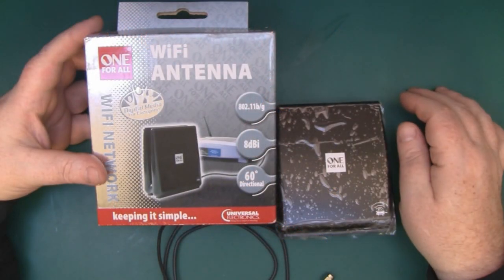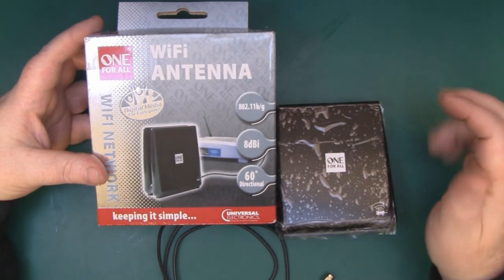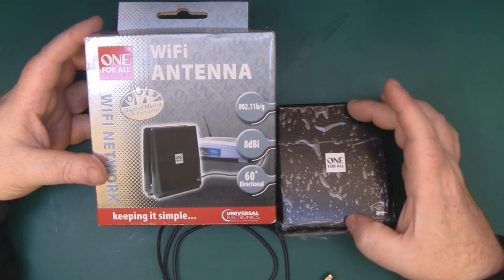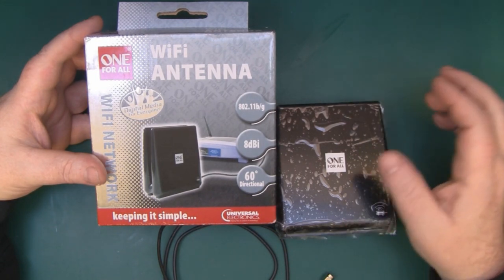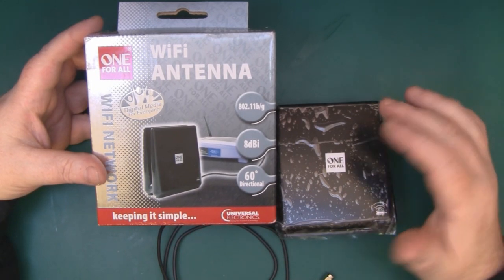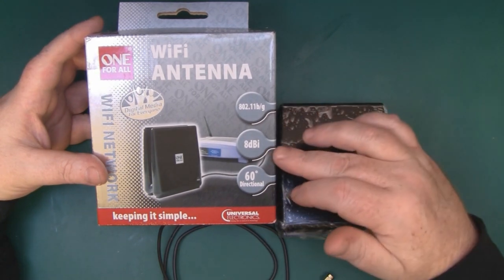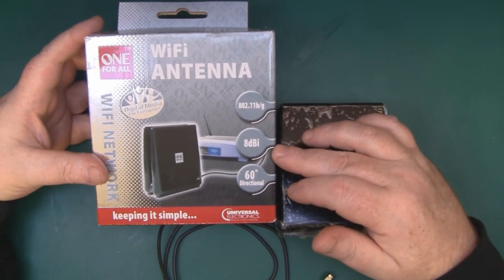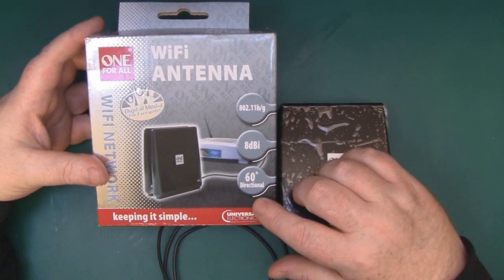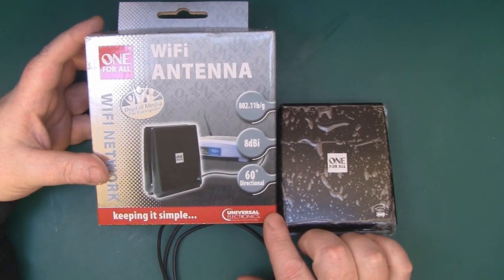I recently picked up this Wi-Fi antenna to take a look at. I picked it up off eBay from a seller here in the UK. It was £4 with free shipping, but I have seen sellers trying to charge a lot more on other websites, especially Amazon. It claims to have 8 dBi and a 60 degree directional pattern and it's actually made by a company Universal Electronics in the Netherlands.